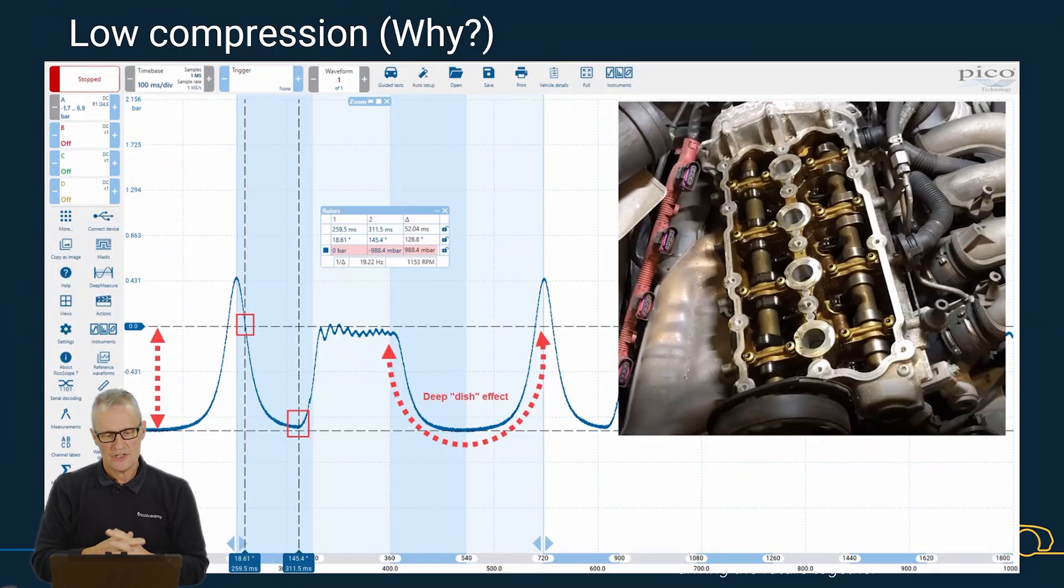This one has low compression—an engine non-start. Let's look at peak pressure. Always read these diagrams left to right. Starting at TDC peak pressure, top of the compression tower, we've got 0.4 bar. Low compression—the cylinder head has to come off. Or does it?